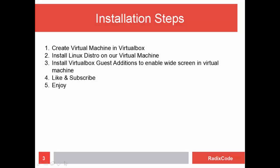Let's see what we are going to do in this video. First of all, we will create a virtual machine in VirtualBox. After that, we will install Linux in VirtualBox. And after installing Linux, we will install VirtualBox Guest Additions to enable widescreen for our Linux distribution.